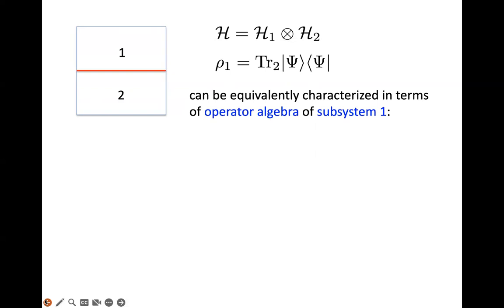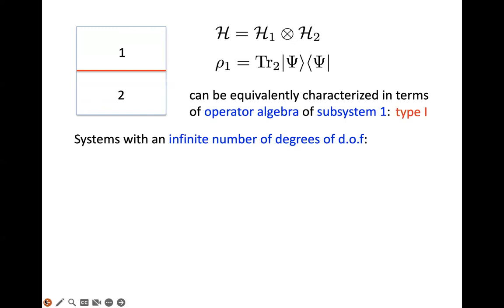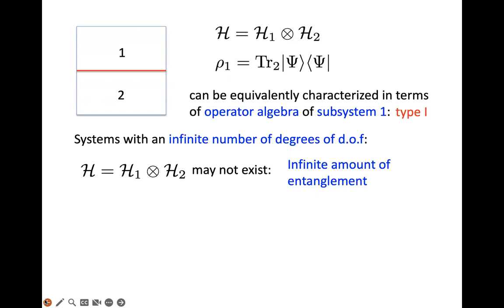In this situation, this does not offer any new insight, so normally we don't talk about it. The operator algebra in this region will be what von Neumann and Murray called Type I. But when you go to a system with an infinite number of degrees of freedom, you can often have the following situation: because you can have an infinite amount of entanglement, the factorization of the Hilbert space may not exist.